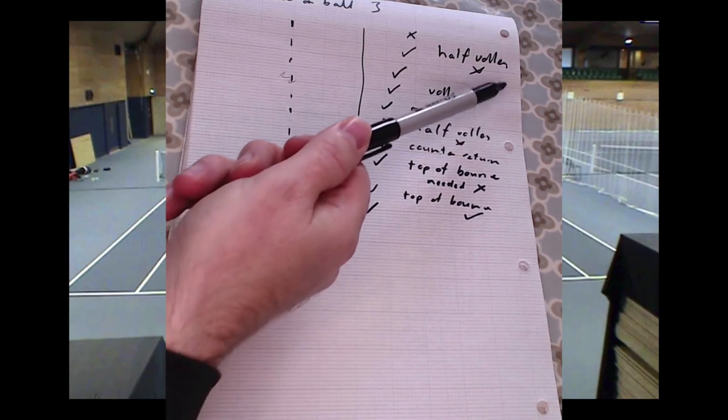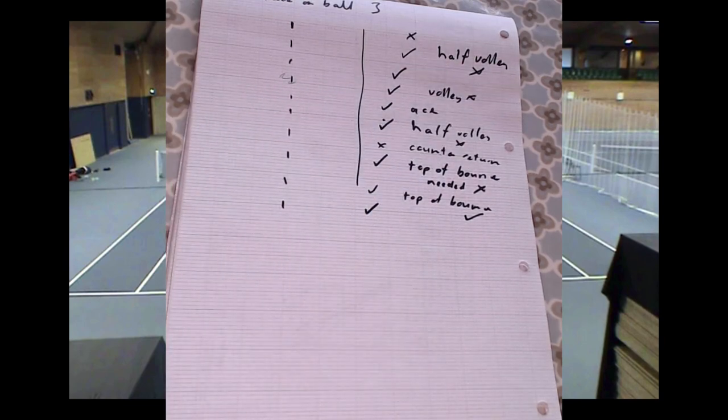You can see how easy it can be just to collate some basic information from the court. The most important thing is it has to relate to the player's development. There's no point in gathering information if it's not going to be used, and there's no point in gathering lots and lots of information if it starts to cloud the vision or muddy the waters. So keep it simple — it can be as simple as drawing a line down a piece of paper, looking for the one thing you've been working on, and then just a tick or a cross.